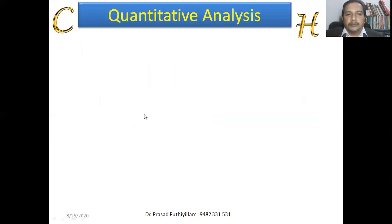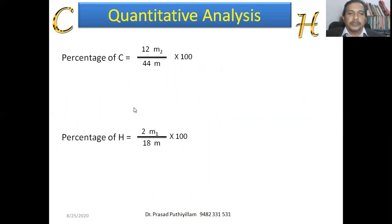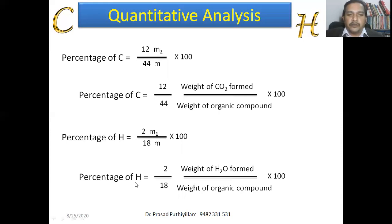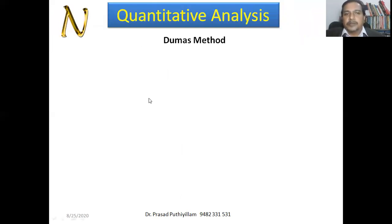So the percentage of carbon is 12M₂ / 44M × 100, and the percentage of hydrogen is 2M₁ / 18M × 100. We can also write: percentage of carbon = (12/44) × (weight of CO₂ formed / weight of organic compound) × 100. That covers carbon and hydrogen estimation.